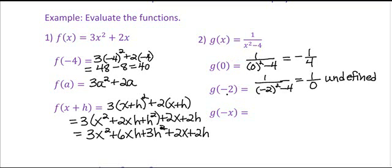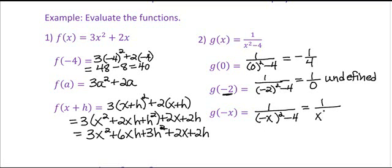So we have found a function that is not defined for every input value — that's going to be important in our next objective. What about g of negative x? If we plug negative x in place of x and square it, well, what happens when you square negative x? You just get x squared. So this is an interesting function — when I substitute in negative x, I get the original function back. That's a property called symmetry, and it's something called an even function, which we'll get into in a later section.